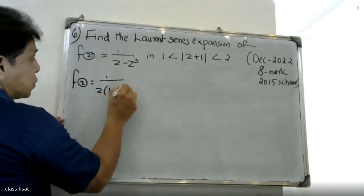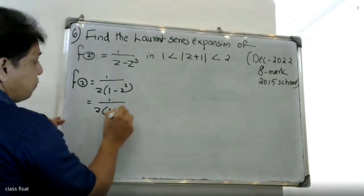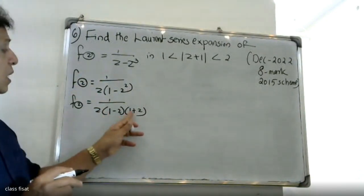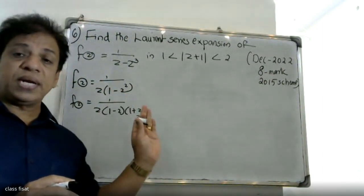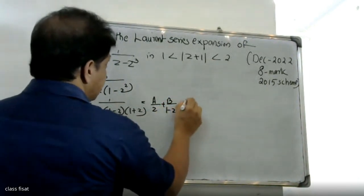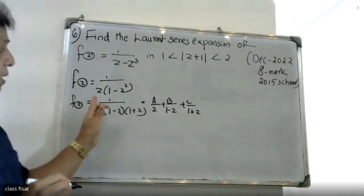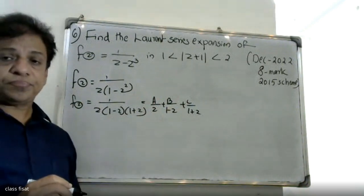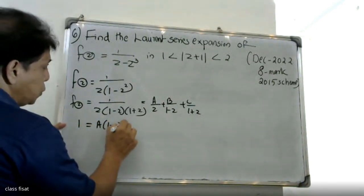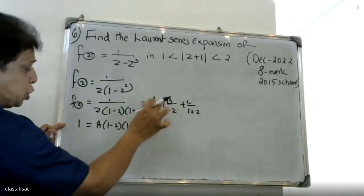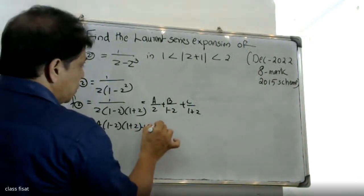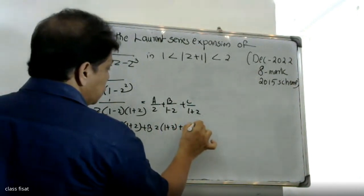We have 1 minus 1 into 1 minus 1 plus. By z into 1 by z into 1 plus x, the net partial fraction. The first one is equal to A into 1 minus x into 1 plus x, plus B into z into 1 plus x, plus C into z into 1 minus x.